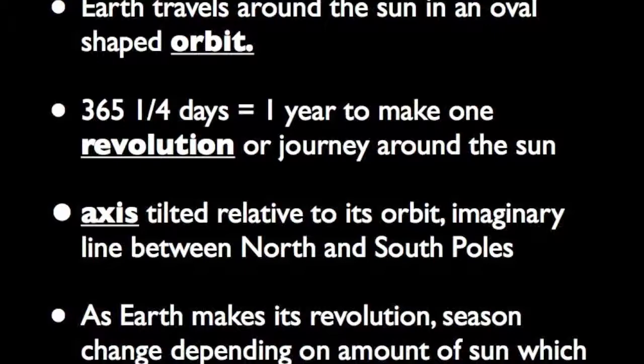Earth takes 365 and one-fourth days, or one year, to make one revolution, or complete journey, around the sun.